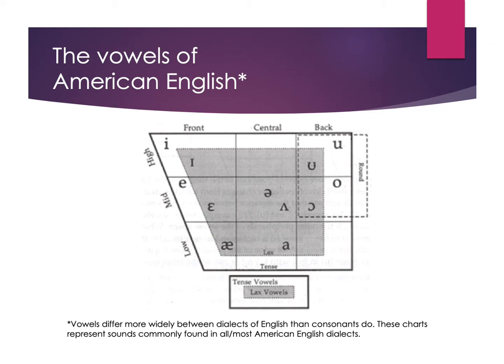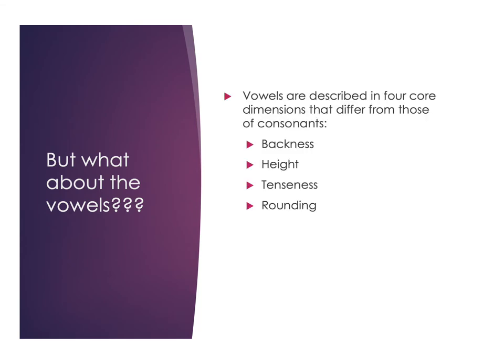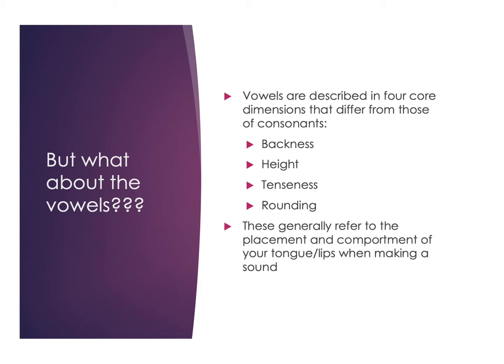When we think about vowels, we have four different ways to describe vowel sounds that are distinct from how we describe consonants. With consonants we have voicing, place, and manner, but with vowels we have four different dimensions: backness, height, tenseness, and rounding. These generally refer to the placement and comportment of your tongue and lips when making a sound. They're a little bit broader in scope than the ways we describe consonants. We'll go through each of them individually and talk about which English sounds fit these different descriptions.